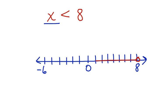And I am going to draw my arrow going this way showing that any value less than 8 and not including 8 will work in this inequality. This is called graphing the solution of an inequality.